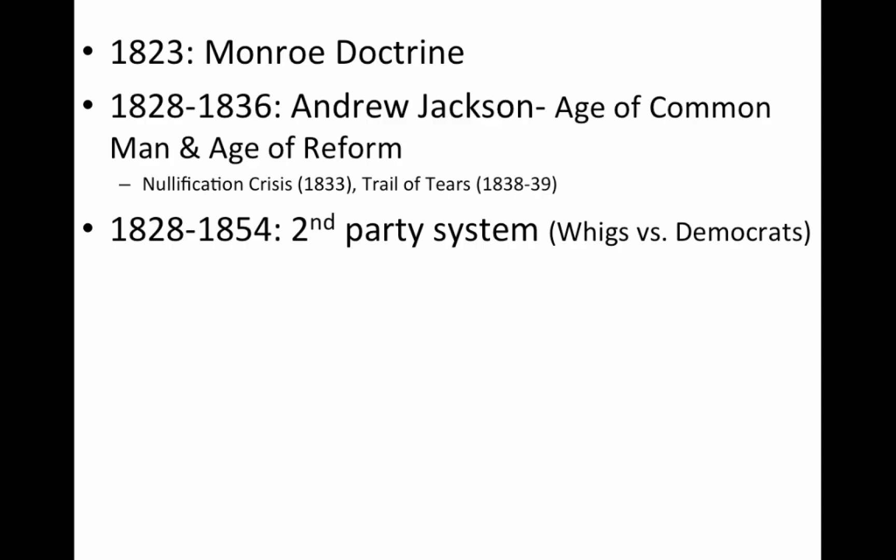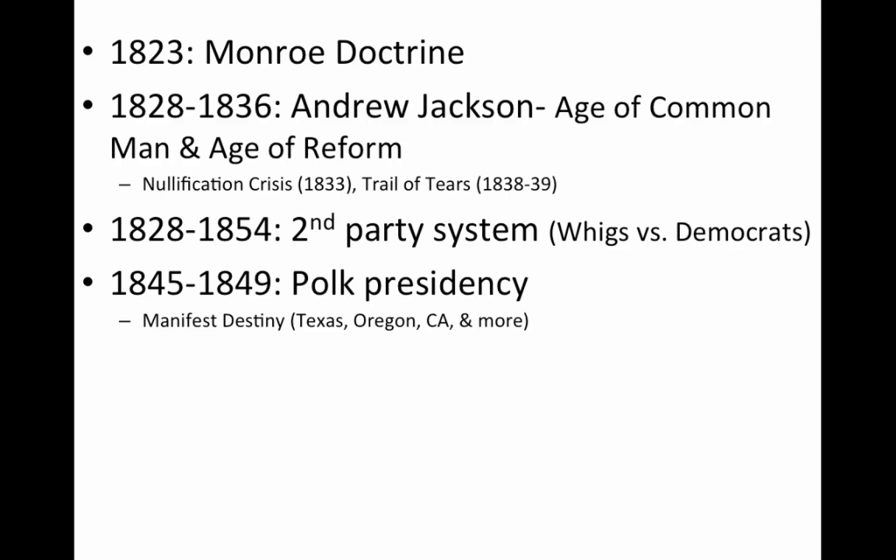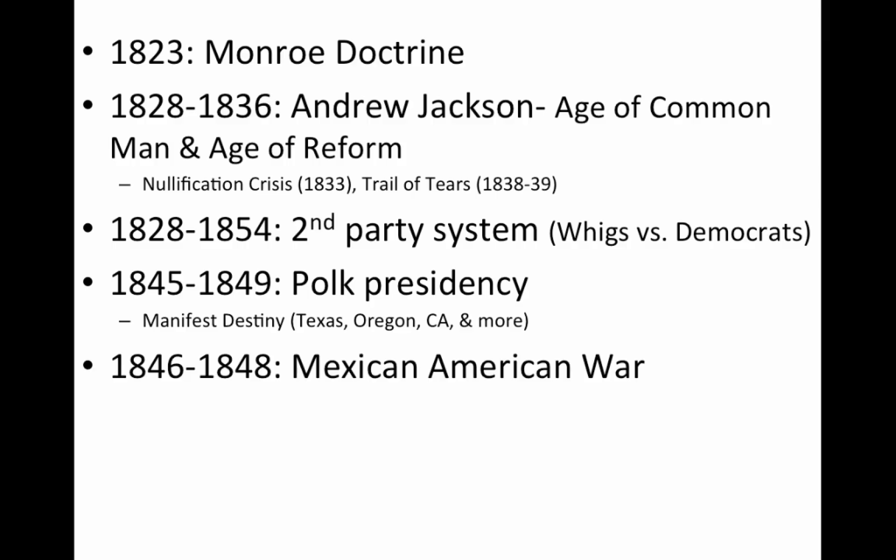1828 to 1854, you have the second party system — Whigs versus Democrats. The Whigs emerged during Jackson's presidency, protesting his policies, particularly his war on the bank. And 1845 to 1849, Polk is elected in '44 and is really known for fulfilling the goals of Manifest Destiny: annexing Texas, taking Oregon, California, and much more. Know about Polk in that time frame of the 1840s.